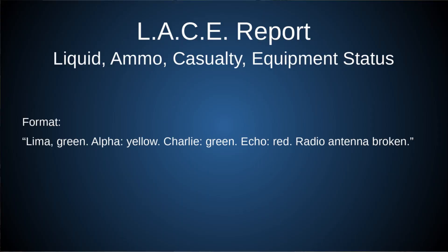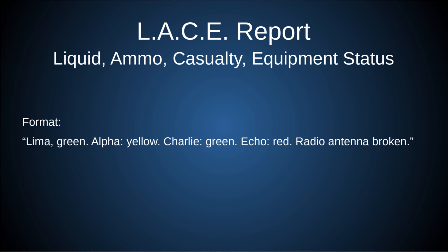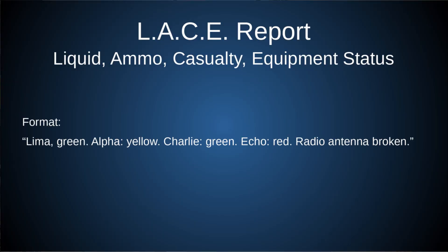Our next type of report is a LACE report, given after an engagement to convey status on four key areas: Liquid (how much water you have), Ammo, Casualty, and Equipment status. It may not even be a radio report — it could just be your platoon or squad leader checking on each member after an engagement. Maybe you've broken contact and regrouped — that's a perfect time for a LACE report. The format is simple: go down the letters — Lima: green, Alpha: yellow, Charlie: green, Echo: red — maybe radio antenna broken. Just give a color to represent how much you have left.